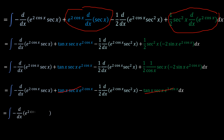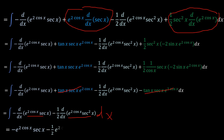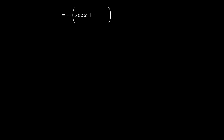We are left with the integration of the derivative of negative e^(2cos x)·sec(x), minus half the derivative of e^(cos x)·sec²(x), with a dx. Since we are integrating the derivatives of these functions, the integration simply returns those functions. So the answer is negative e^(2cos x)·sec²(x), or more neatly: negative (sec(x) + sec²(x)/2) times e^(cos x), plus the constant of integration C.